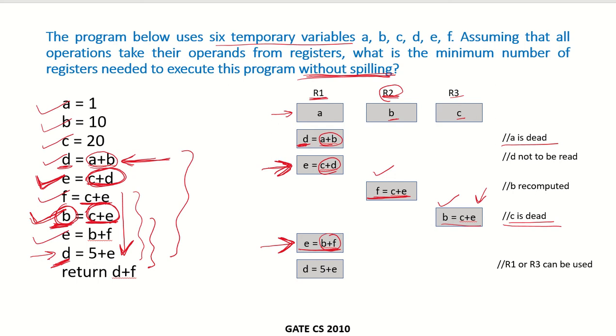Now for this purpose we can either use R1 or if there is any other available register where we feel that the variable is dead or is not being used anywhere we can use. But we see that d is also required over here and we need to compute d.